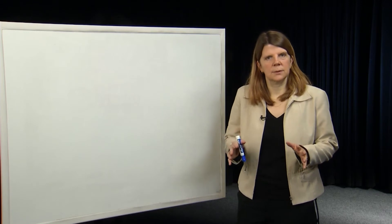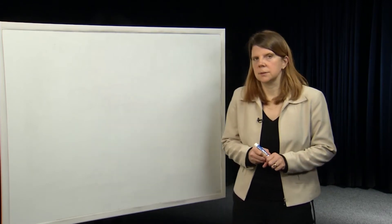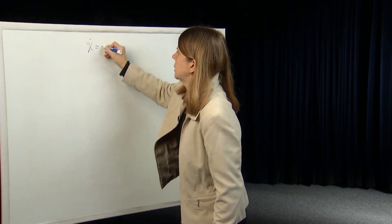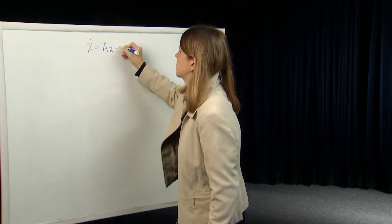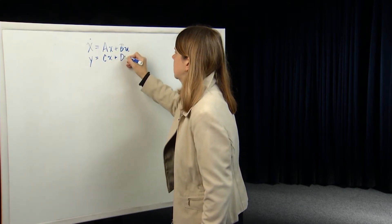So again, we're dealing with linear time invariant systems at this point. So in general, this is our system: x dot is equal to Ax plus Bu, y is equal to Cx plus Du.